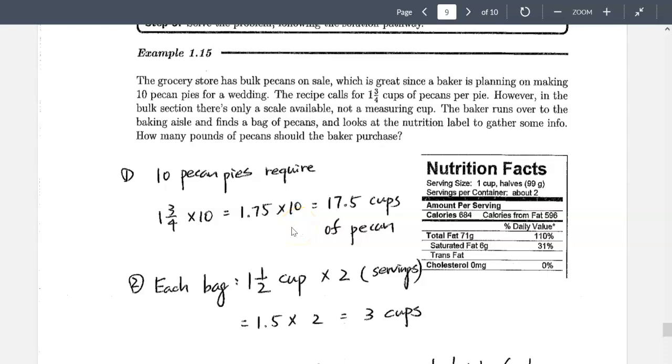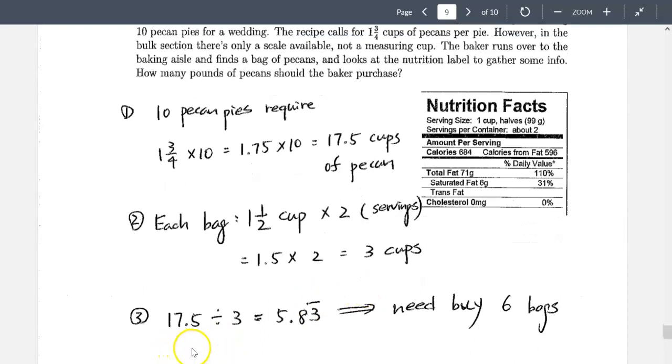Now, if you look at the nutrition facts, it says each bag has about two servings, and it contains one and a half cups serving size, and then the serving size is two. So in other words, each bag has one and a half times two. So each bag has three cups of pecan in it. Well, since we need 17.5 cups, so we take 17.5 divided by three. So the answer is 5.8. So we can't really buy 5.8 bags of pecans. So therefore, we need to buy a total of six bags to bake our 10 pecan pies.